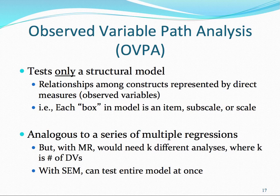In observed variable path analysis, our constructs are represented by direct measures—our observed variables—so we only have boxes in these models. These can be either the particular items of a questionnaire or the means of subscales or a scale.